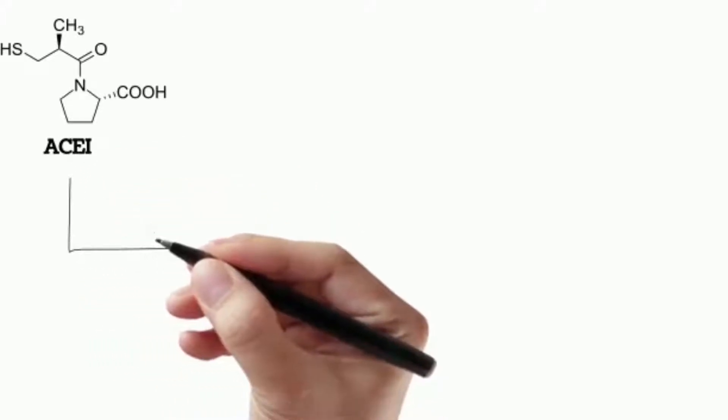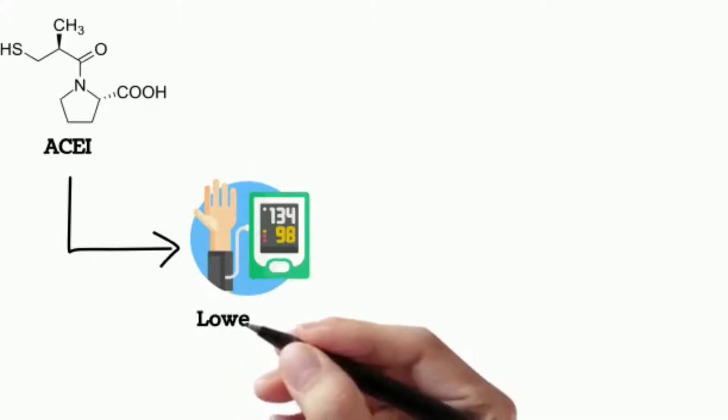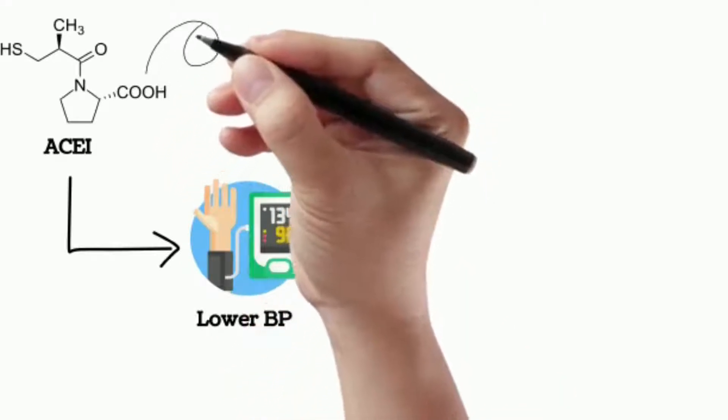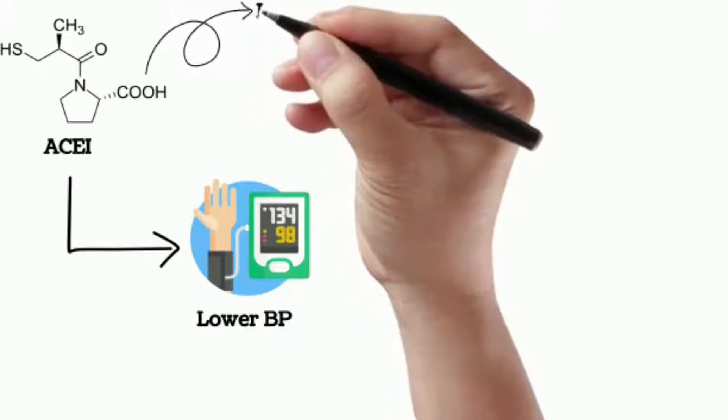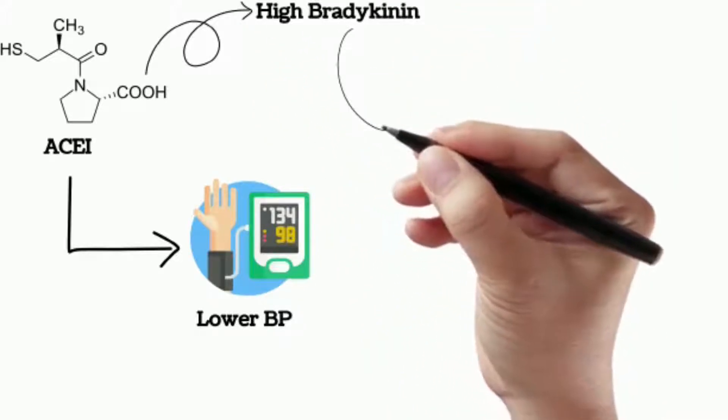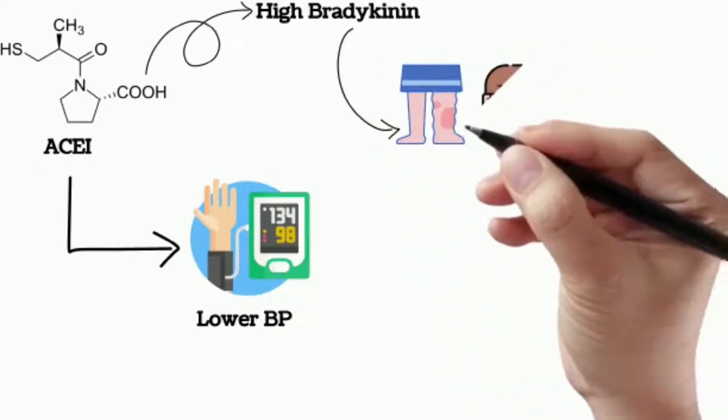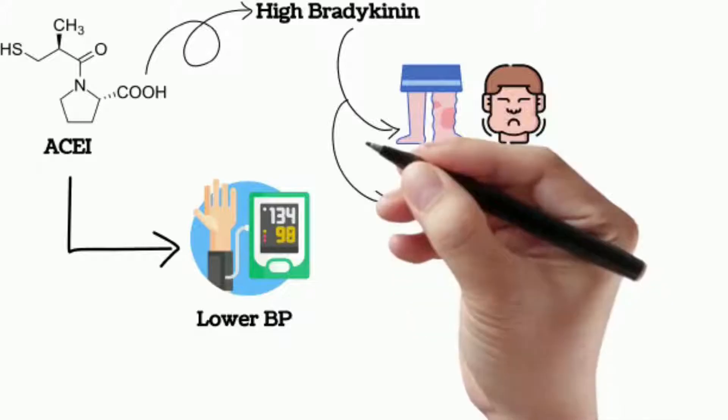As a result of inhibiting the ACE enzyme in the bradykinin system, the ACE inhibitor drugs allow for increased levels of bradykinin, which would normally be degraded. This mechanism can explain the two most common side effects seen with ACE inhibitors such as angioedema and cough.